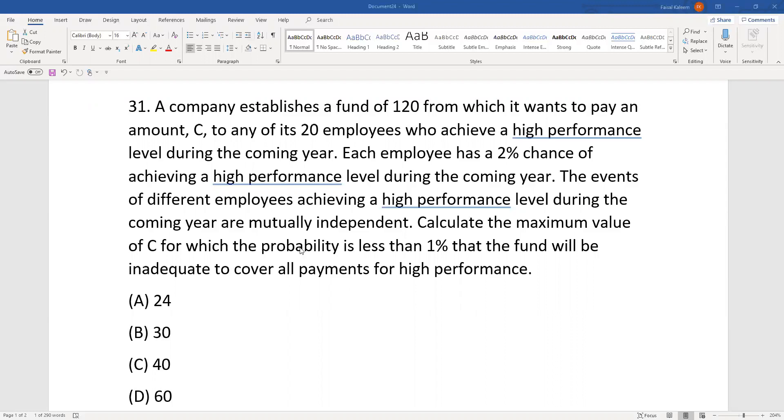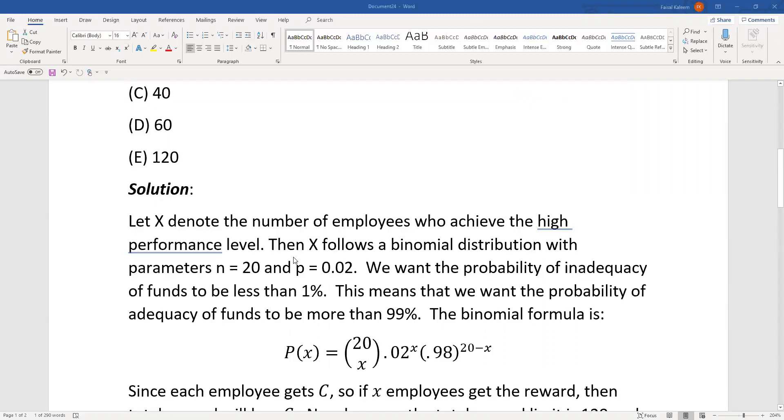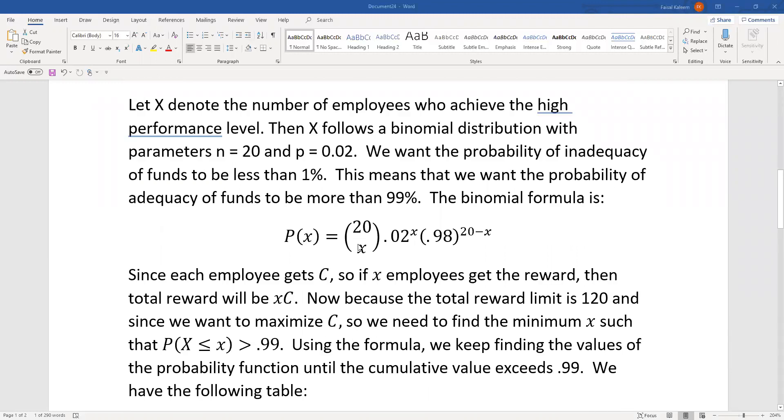The number of employees who will get the reward follows a binomial distribution because an employee will either get the reward or not. There are a maximum of 20 employees, n is 20, with a 2% chance of success. The binomial formula is nCx, and n is 20, and p^x, and here we have 1 minus p which is 1 minus 0.02, that's 0.98, to the power n minus x, so 20 minus x.